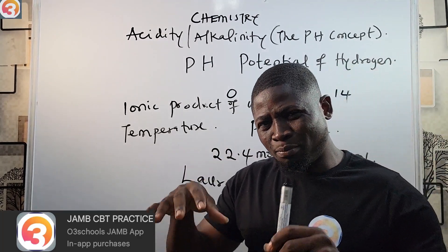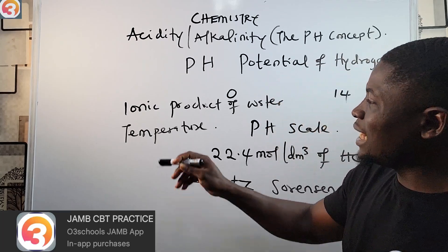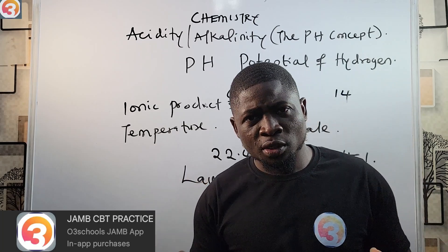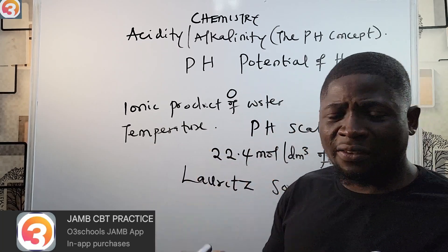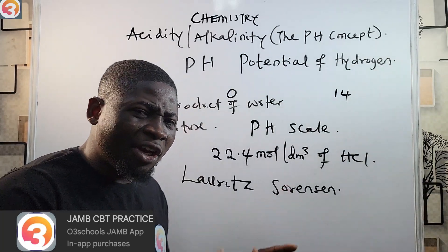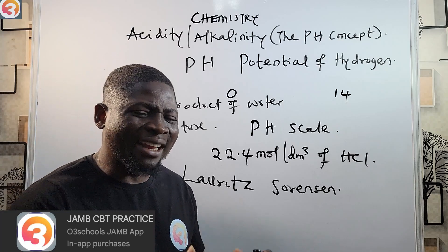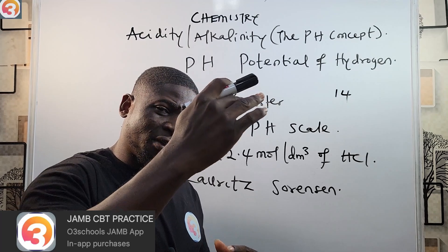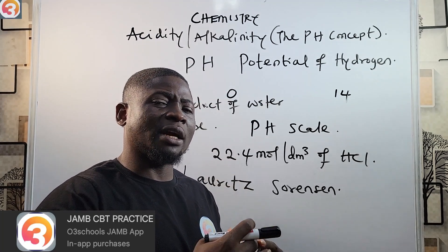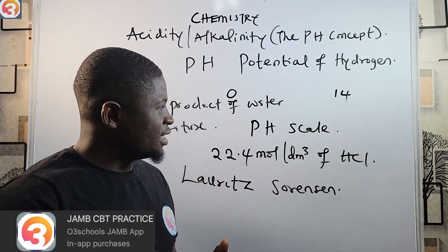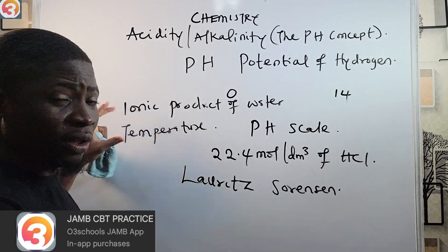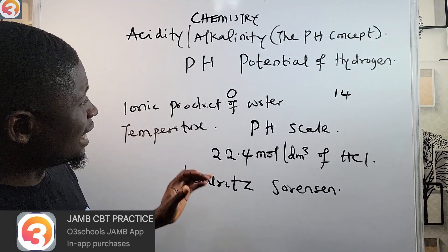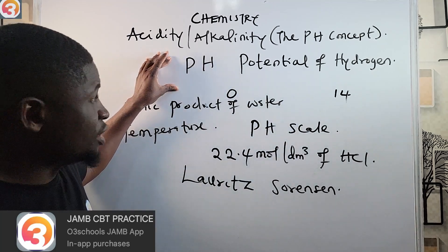The pH of a solution depends on the temperature at which it is measured because of the variation between the ionic product of water and temperature — which means that the degree of ionization of water increases with increasing temperature. Once you increase the temperature, the degree of ionization of water will increase.